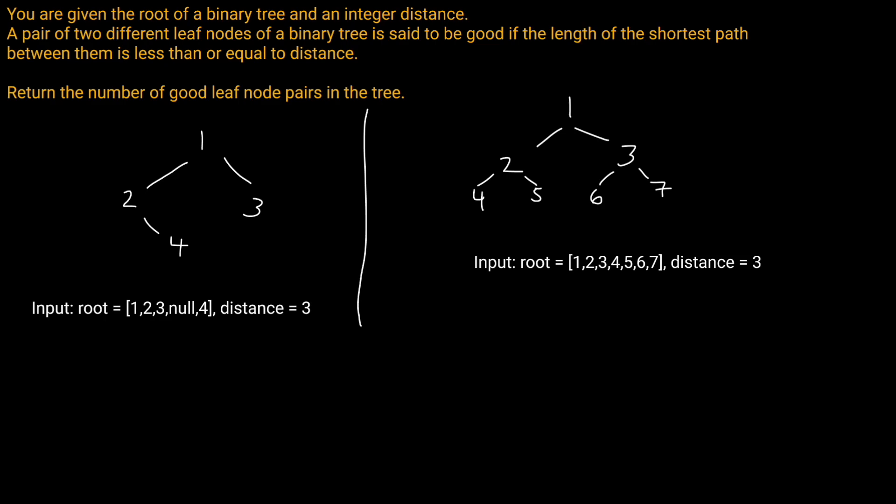You are given the root of a binary tree and an integer distance. A pair of two different leaf nodes of a binary tree is said to be good if the length of the shortest path between them is less than or equal to distance. Return the number of good leaf node pairs in the tree.